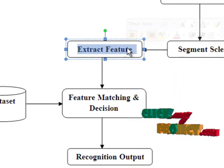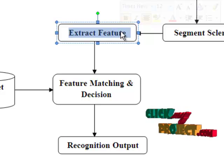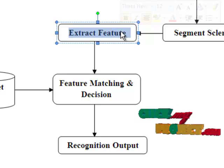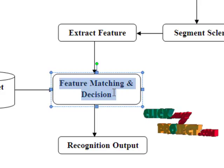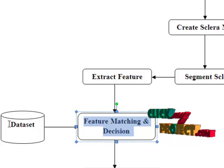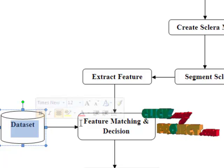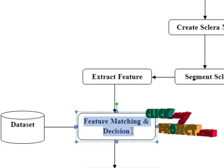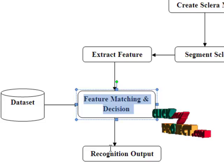Next, features are extracted from the segmented sclera image. Features include the binary vessel pattern, line thickness, line length, and number of lines. Before the matching process, feature vectors are extracted for all images in the dataset. The feature vector of the given test image is then compared with the trained dataset using a template matching mechanism.